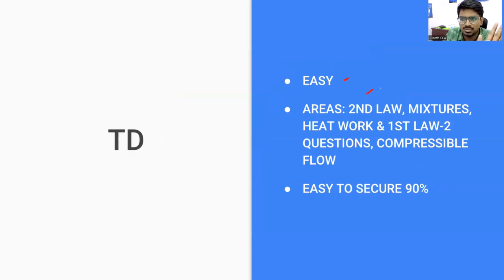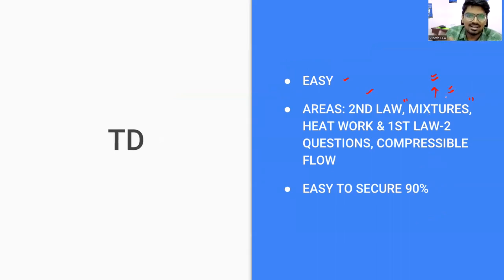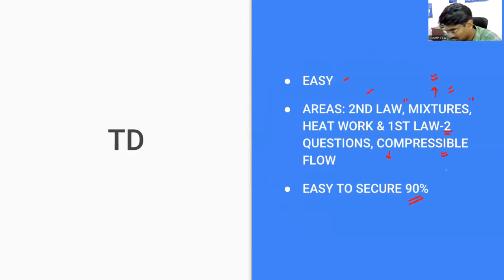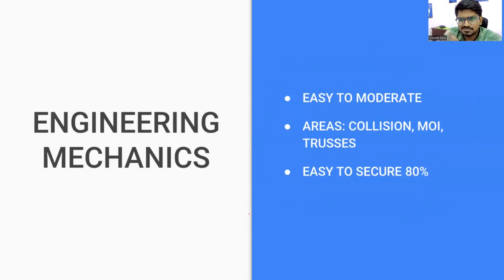Thermodynamics: questions are from the second law — direct heat engine and heat pump questions. Mixtures topic is a little new to ME but we covered it in the course. Generally, mixture of gases questions concentrate on XE, not ME, but this time they included it for ME too. There are a number of questions in our test series related to mixtures. Heat and work first law questions are two easy questions. Compressible flow is moderate — it is a recently added area, so it may feel a little difficult, but it's still manageable. Easy to secure 90% here.